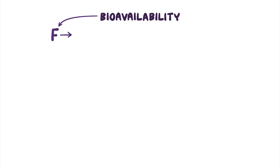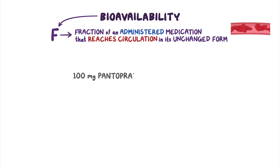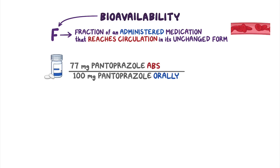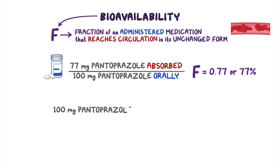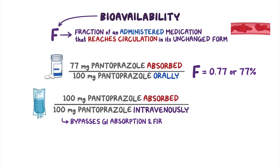This brings us to the concept of bioavailability, or F, which is the fraction of an administered medication that eventually reaches the circulation in the unchanged form. For example, if someone takes 100 mg of pantoprazole orally and only 77 mg of this is absorbed into the circulation, the bioavailability is 0.77, or 77%. In contrast, if the same 100 mg pantoprazole is taken intravenously, all of it goes directly into the circulation, bypassing the gastrointestinal absorption and first-pass metabolism.